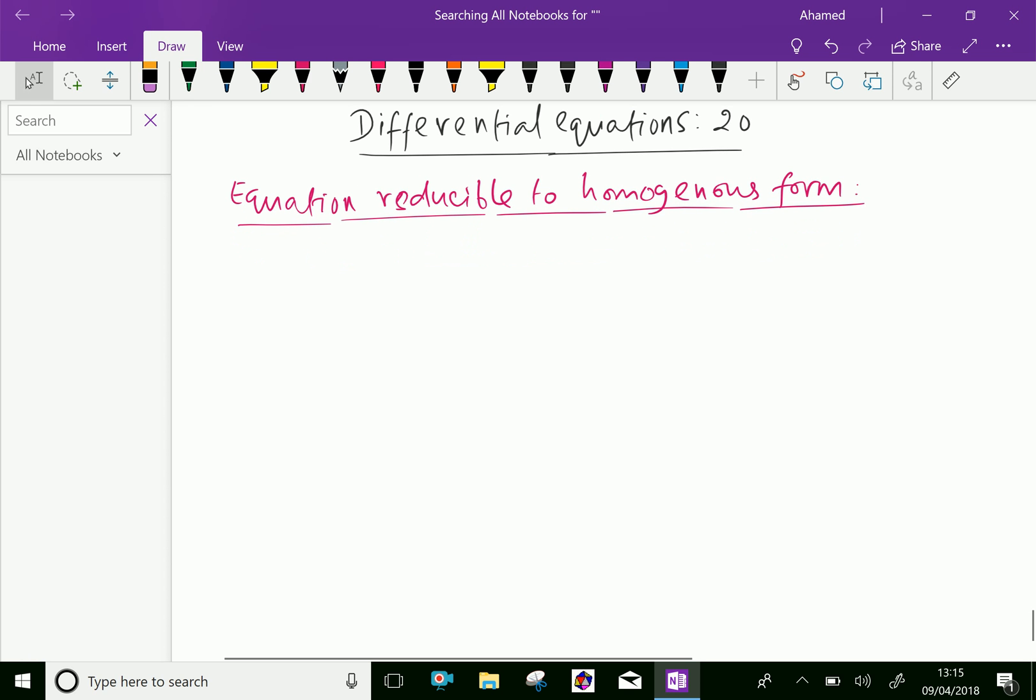Look at this example: dy by dx equal ax plus by plus c over ax plus by plus c can be reduced to homogeneous form.